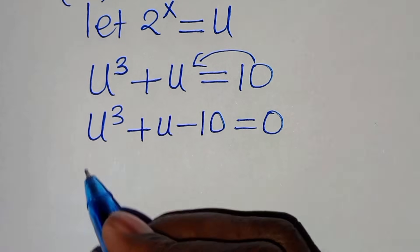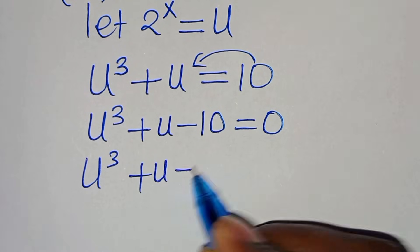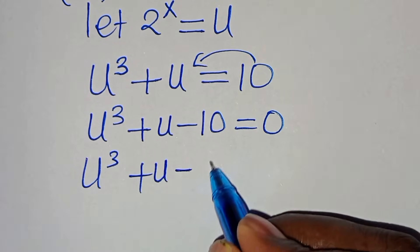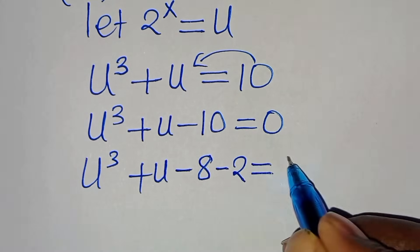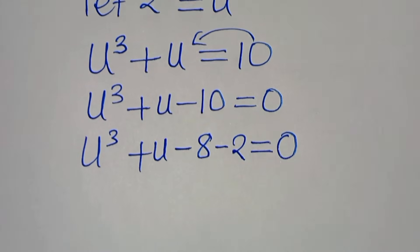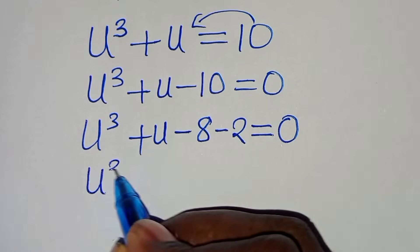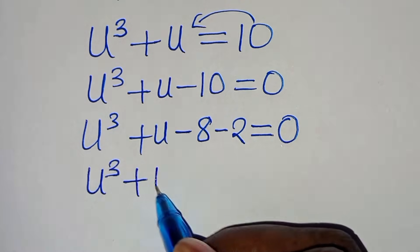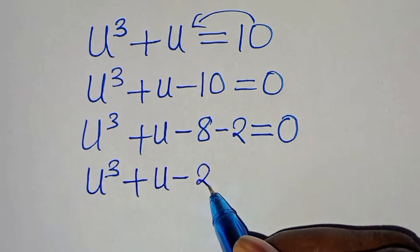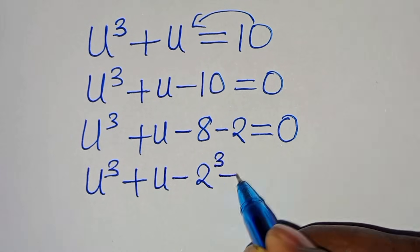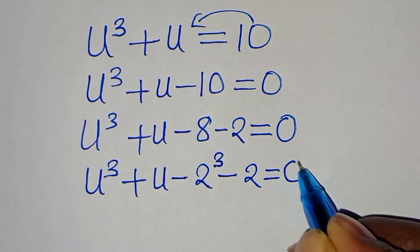We have u to the power of 3 plus u minus 10, and we split minus 10 as minus 8 minus 2. So we have u to the power of 3 plus u minus 8 — which is 2 to the power of 3 — minus 2, and this is equal to 0.